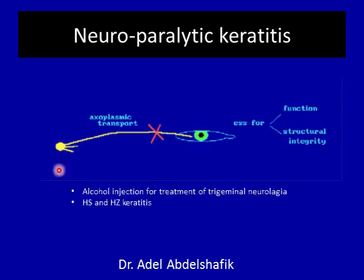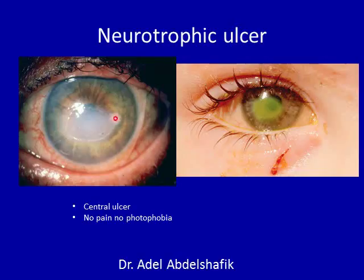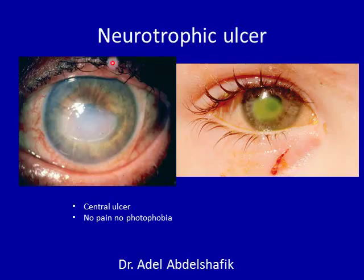So if the trigeminal ganglion is destroyed, as in treatment of trigeminal neuralgia when alcohol is injected to destroy the ganglion, or after herpes simplex and herpes zoster keratitis which leave the cornea with less sensation or no sensation at all, such eyes are liable to develop this ulcer. As you notice, the ulcer is in the center — this is the area farthest away from the limbus where some nutrition can percolate.